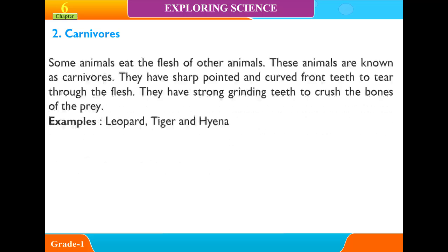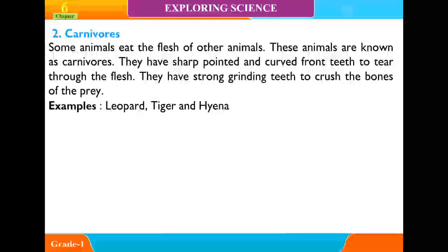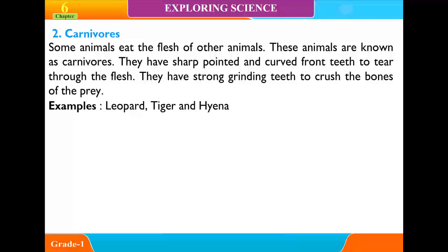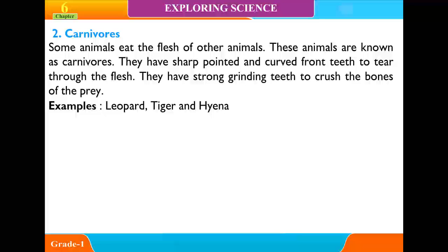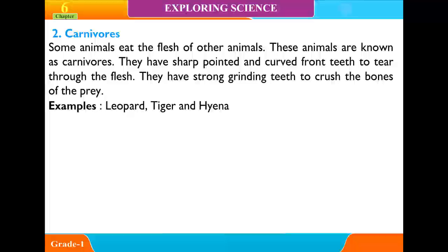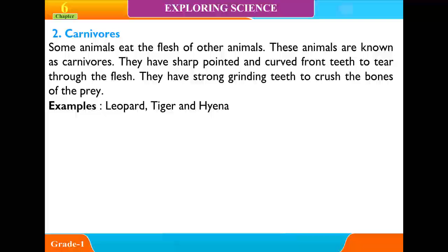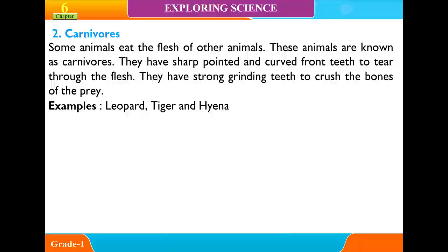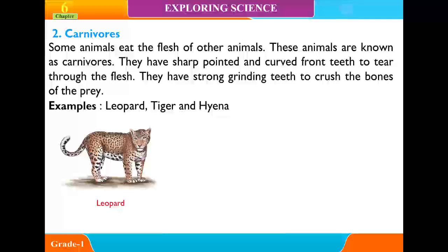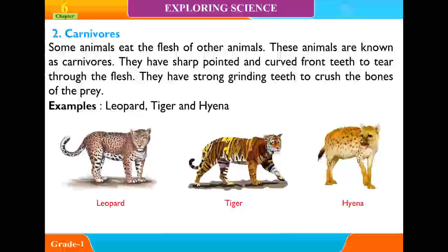Carnivores: Some animals eat the flesh of other animals. These animals are known as carnivores. They have sharp, pointed and curved front teeth to tear through the flesh. They also have strong grinding teeth to crush the bones of the prey. Examples include leopard, tiger and hyena.